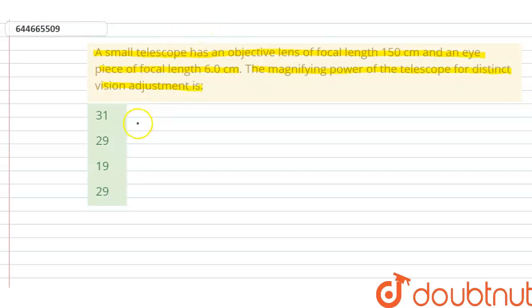The solution for this will be, we know that magnification is given by F0 times 1 upon Fe plus 1 upon V.